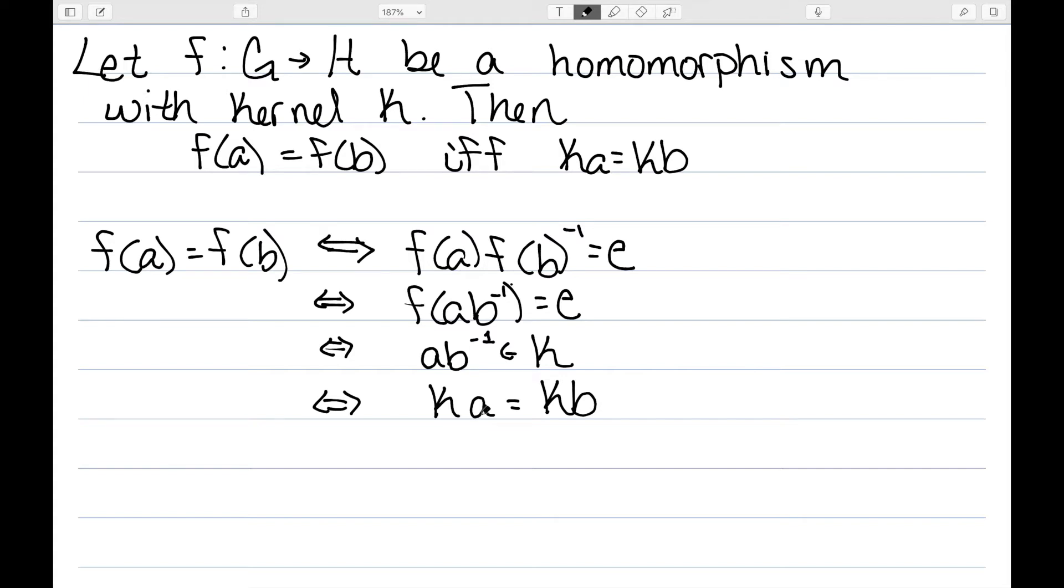So this tells us that if F is some homomorphism from G to H with kernel K, all of the elements in any fixed coset of K have the same image and conversely elements which have the same image are in the same coset of K.